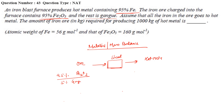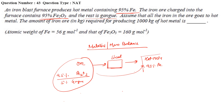In the ore, 95% is Fe2O3 and 5% is gangue. The hot metal contains 95% iron. All the iron from the ore goes into the hot metal, so we need to balance the iron. Let the amount of iron ore be X kg. The amount of Fe2O3 in the ore is 0.95X. We need to find the iron content in that Fe2O3.